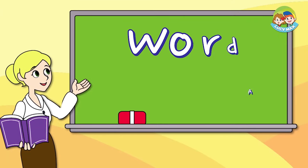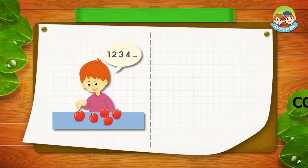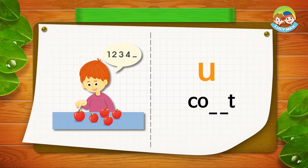Here you will see some blanks with a picture. Put a letter in each blank to make a word for the picture. We'll do it together. The boy counts the apples. The first blank will be U, the next one will be N. You made the word count.